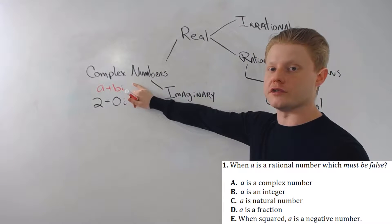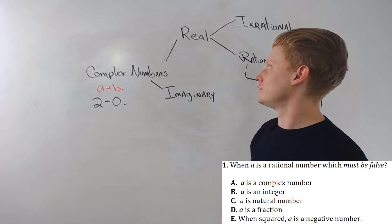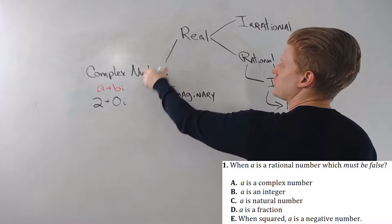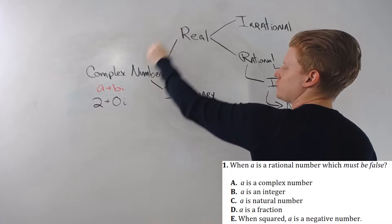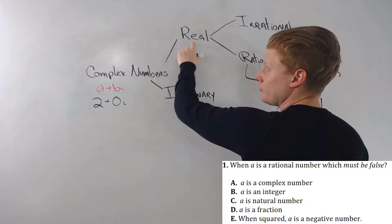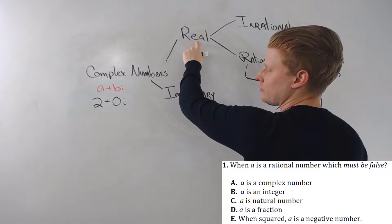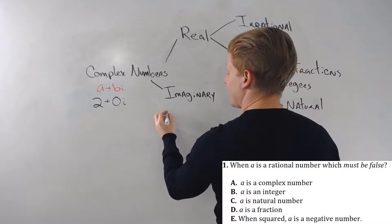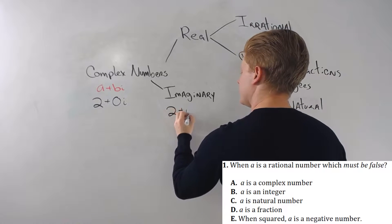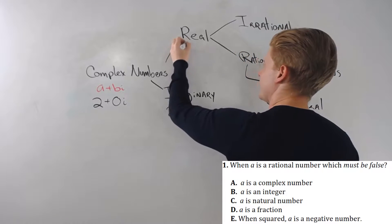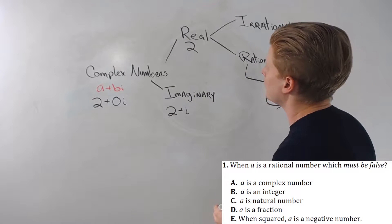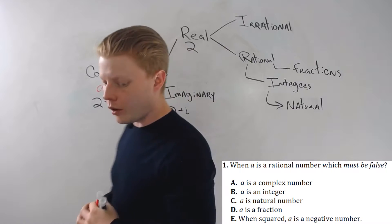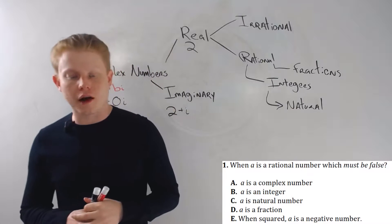Next, we split complex numbers into real numbers — which have basically no visible i, meaning there's a zero in front of the i — and imaginary numbers, which have an i. Something like 2 plus i would be an example of an imaginary number.